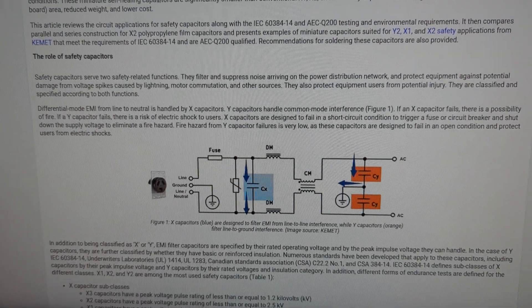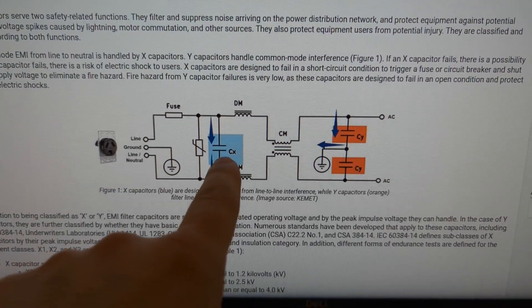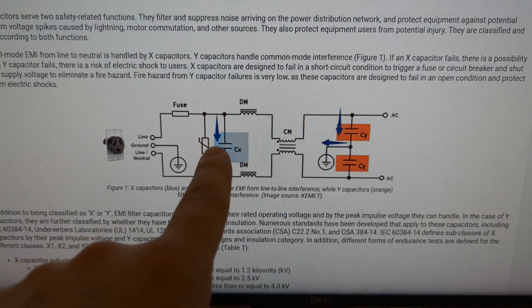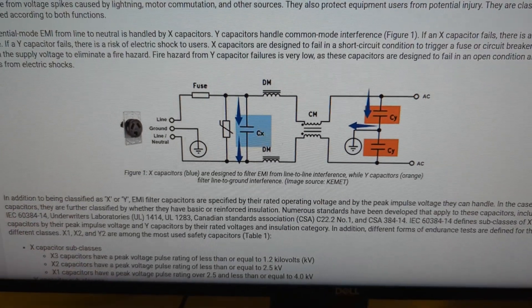Let's see what makes them safety capacitors basically. So let's take this capacitor for example. This is an X-class safety capacitor and that's because it goes across mains basically.